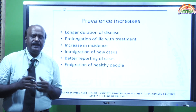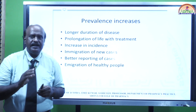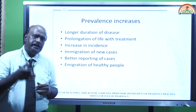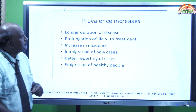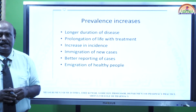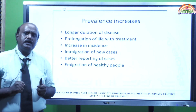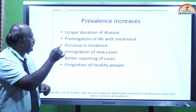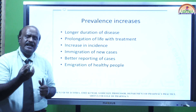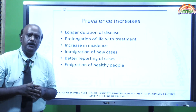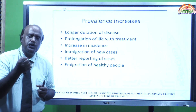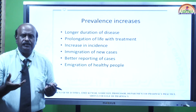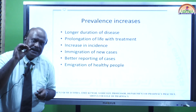Prevalence can increase or decrease based on various factors. Factors that increase prevalence: First, longer duration of disease — if the disease persists for a long time and people are not getting cured, new cases keep being added, so prevalence keeps increasing. Second, prolongation of life with treatment — people are on treatment but not yet cured, so the disease continues and prevalence keeps increasing.